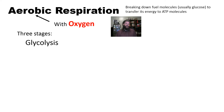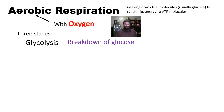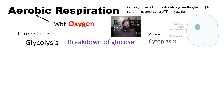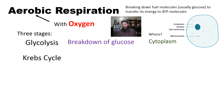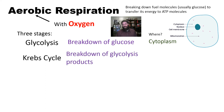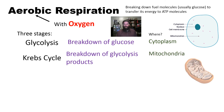The first stage is glycolysis. Like the name kind of hints, it involves the breakdown of glucose. And though we usually think of the mitochondrion as the powerhouse of the cell where cellular respiration takes place, glycolysis — the beginning of cellular respiration — actually takes place within the cytoplasm. The products of glycolysis then move into the Krebs cycle, which takes those products and breaks them down even further.